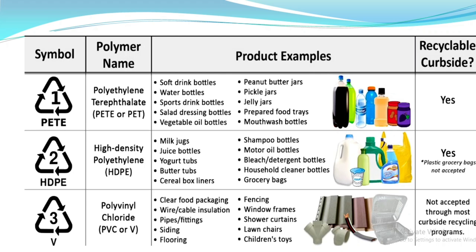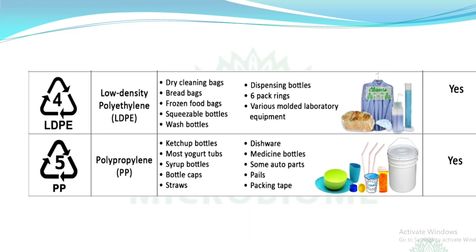Code 3: Polyvinyl chloride (PVC), used for clear food packaging, wire insulation, pipes and fittings, siding, flooring, fencing, shower curtains, lawn chairs, and children's toys. Code 4: Low density polyethylene (LDPE), used for dry cleaning bags, bread bags, squeezable bottles, and dispensing bottles.